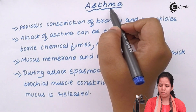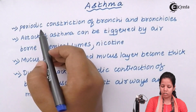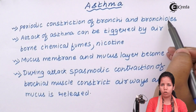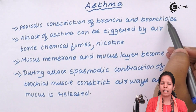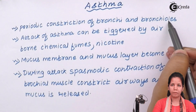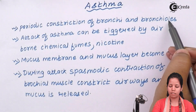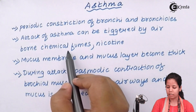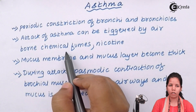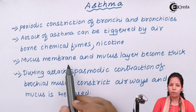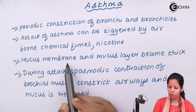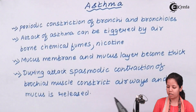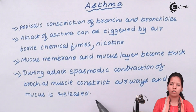To summarize, asthma can be defined as a disorder which occurs due to periodic constriction of the bronchi or bronchial region. Asthmatic attacks are severely common in cold temperate climates and cold seasons. An attack can be triggered by airborne chemical fumes or nicotine and such substances. Essentially, the mucous membrane and mucous layer become thick, and spasmodic contraction of the bronchial muscles constricts the air passages while mucus is released.